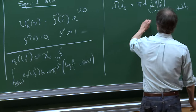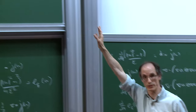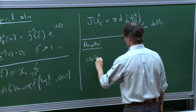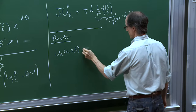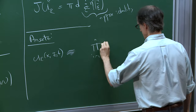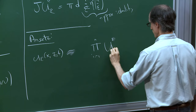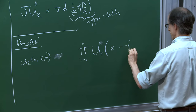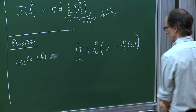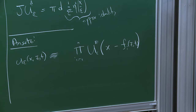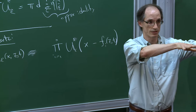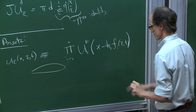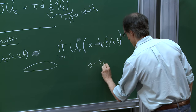The ansatz I'm interested in is the following. I want to look for solutions of these two equations where u_epsilon looks like a product of: I take the basic degree-1 vortex on scale epsilon on each horizontal slice, then translate it by an amount depending on the vertical and time variables f_i(z,t). I also want to put a small translation at scale h_epsilon.